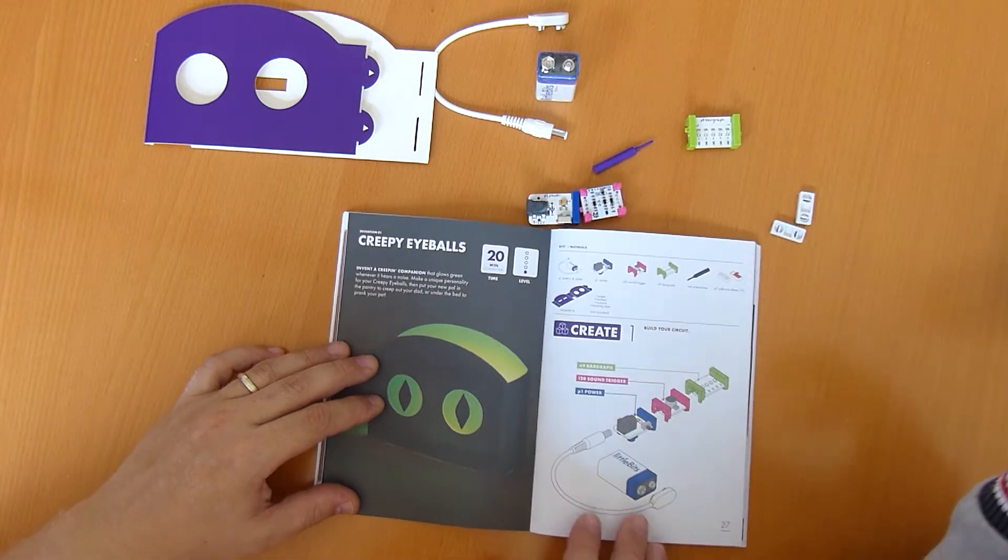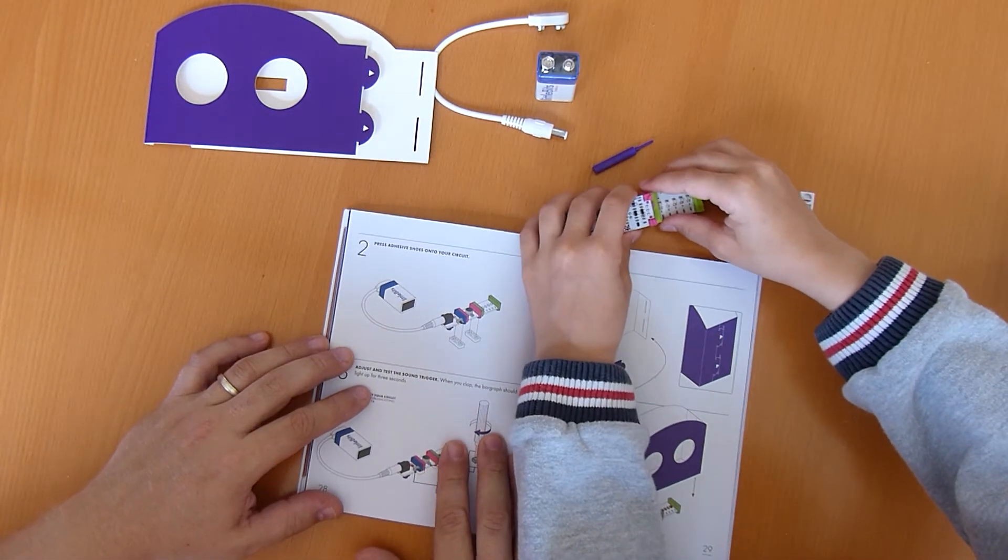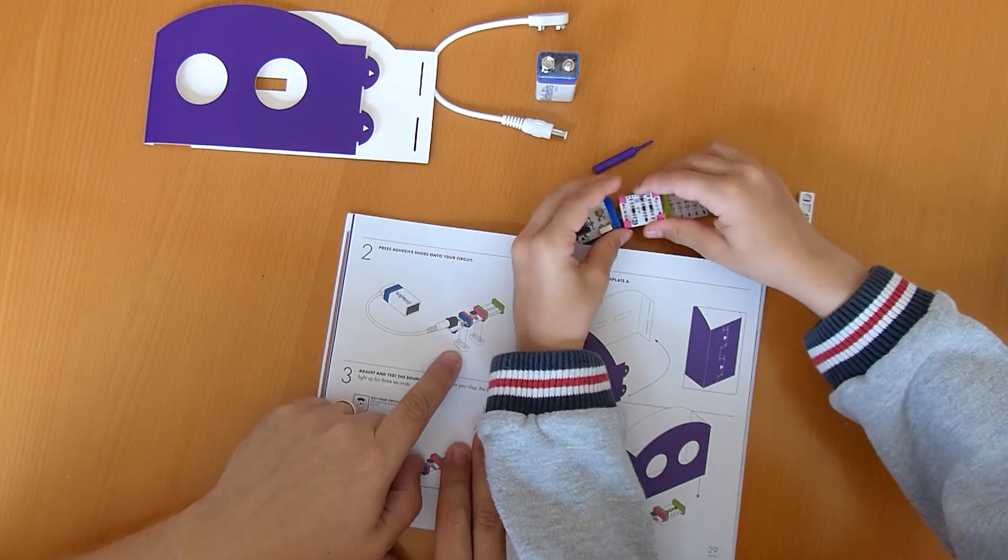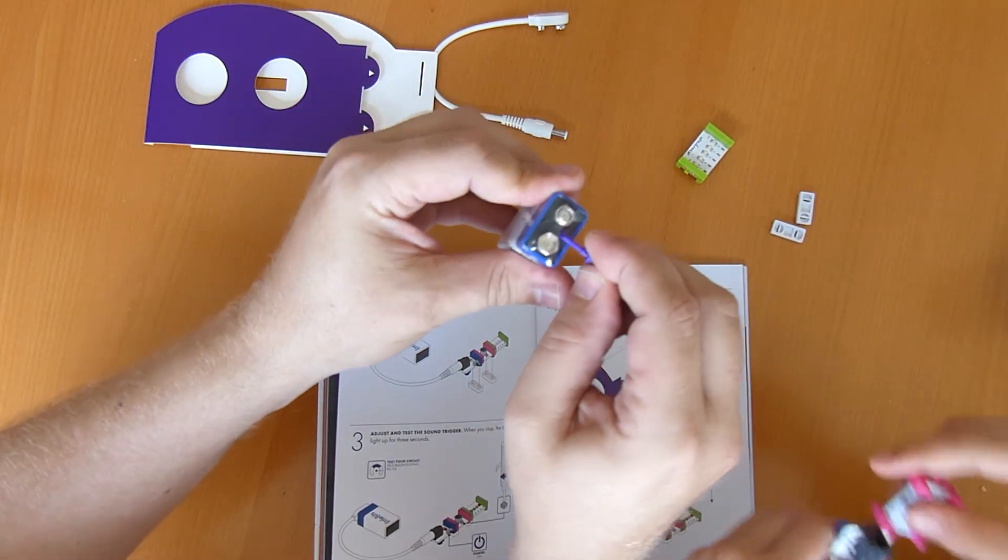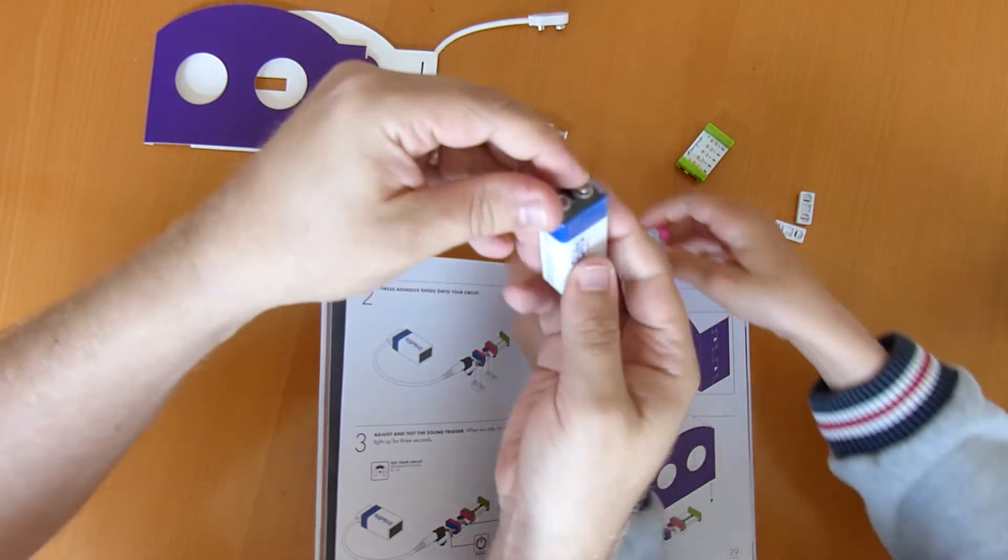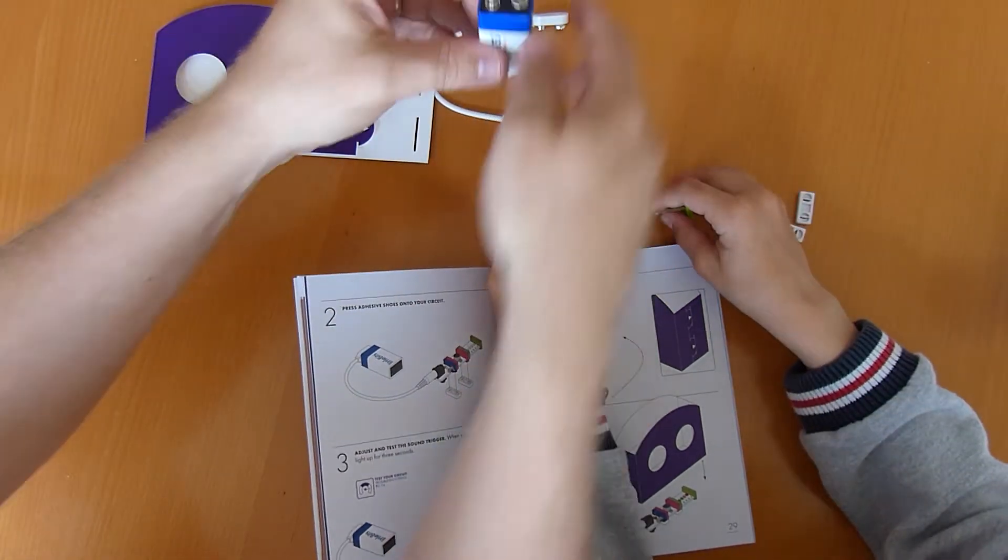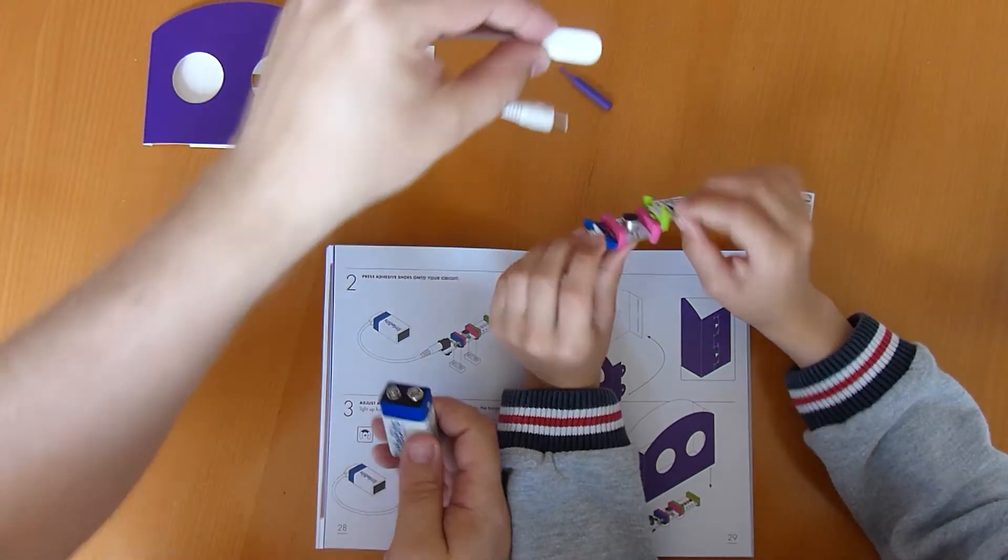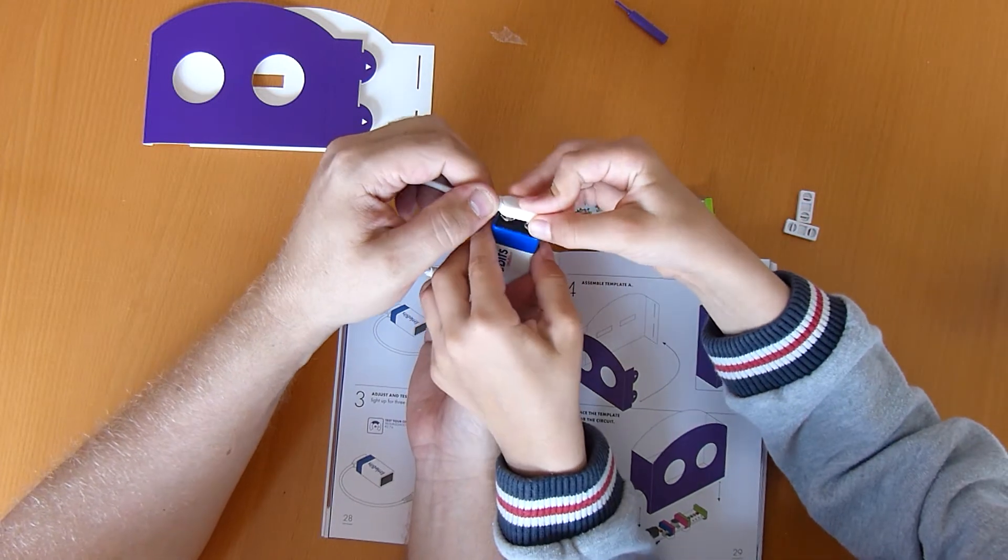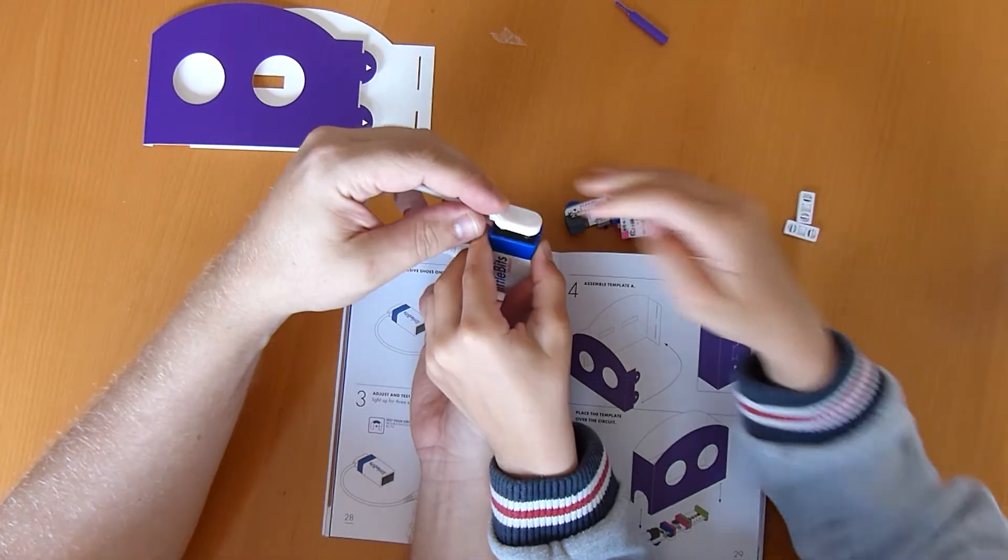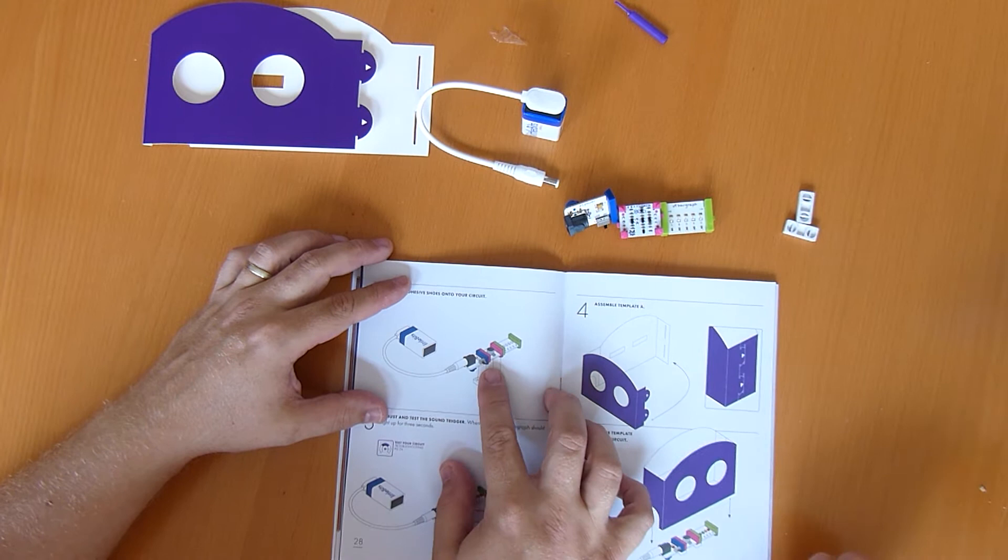What's the first page? It says take the bar graph, the sound trigger, and the power. Press adhesive shoes onto it. We've got to connect three together. So if I take this off the battery, there's a little bit of plastic on the battery just to stop it shorting. And then we've got to clip this to the battery. Can you do that for me? You've got to get around the right way. So if you look they've got to be the opposite.